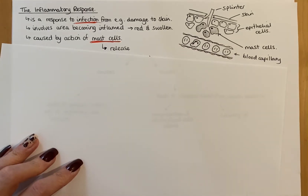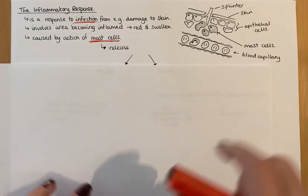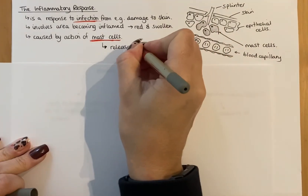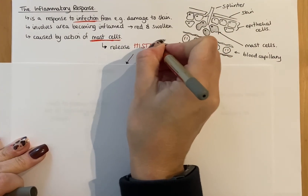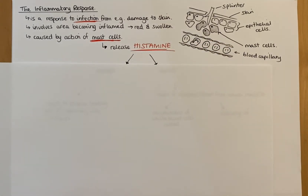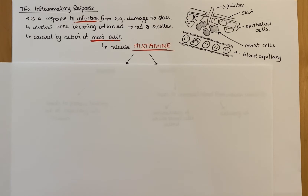Mast cells release a chemical you've probably heard of: histamine. You'll recognize that from antihistamines, which are taken in response to allergies - we'll talk about that later. Your body can overrespond to certain things and produce too much histamine, which can be dangerous. But right now histamine is a really good thing - it's how you bring about the inflammatory response and try to prevent infection getting more serious.